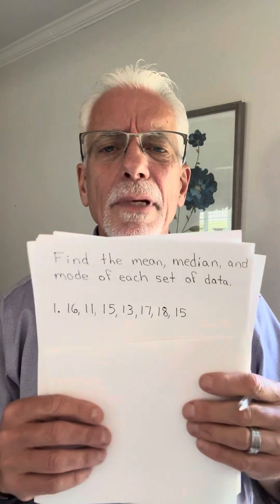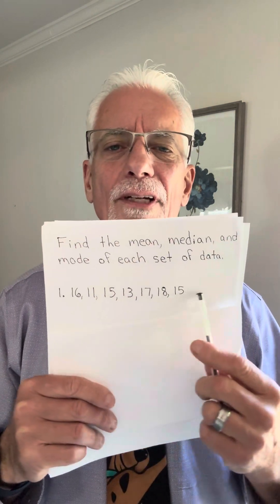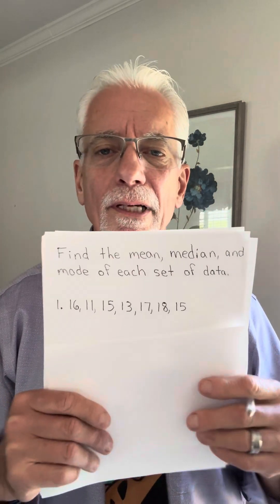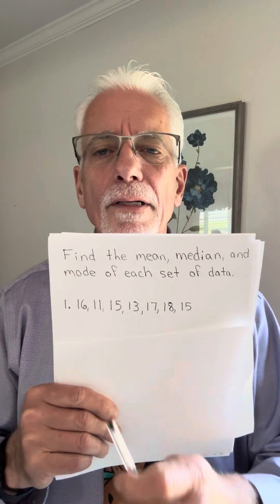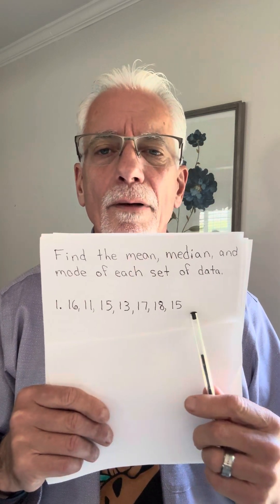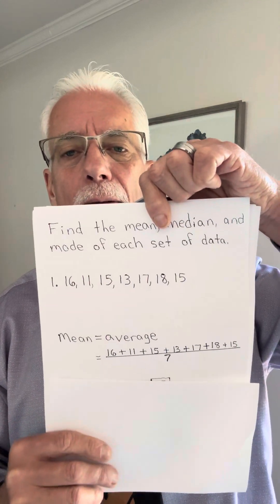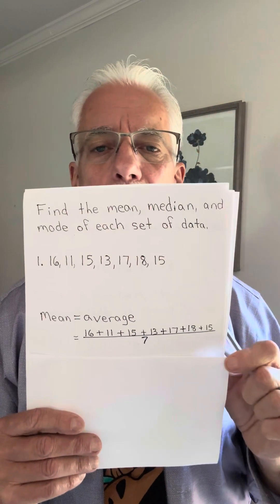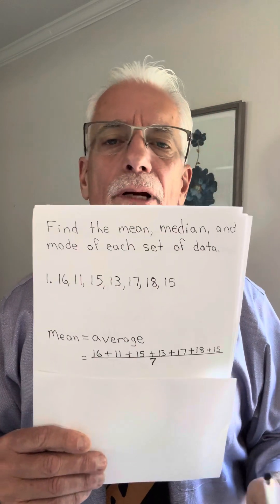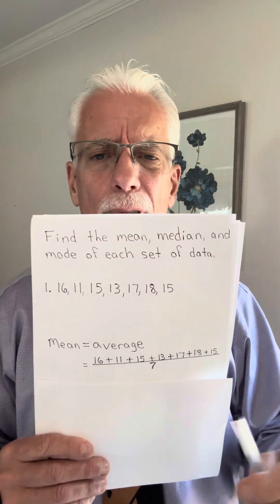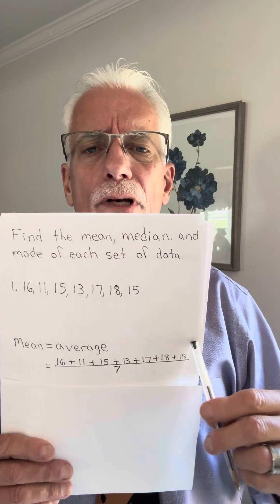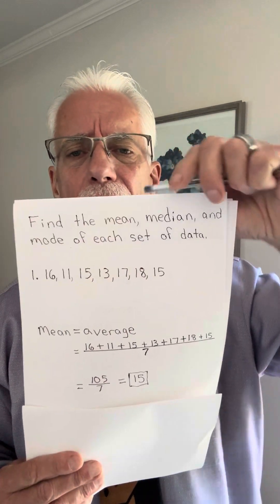I'm going to use another piece of paper so we don't get overloaded. Find the mean, median, and mode of each set of data. I just posted seven numbers right here — these could be the ages of people in a club or something. To find the mean, that is the average, we're going to add up all these numbers and divide by seven because there's seven numbers. I'm adding all of those numbers up and dividing by seven. Those add up to 105, and 105 divided by seven is 15.